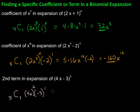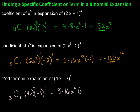We're asked to find the entire term, so let's calculate it out. 3C1 is 3. Then we have (4x)² — 4 squared is 16, so that's 16x². Then negative 3 to the first is negative 3. Working it out: 3 times negative 3 is negative 9, and 16 times negative 9 is negative 144. So the entire second term is negative 144x².